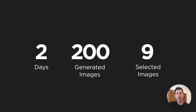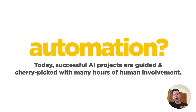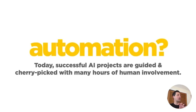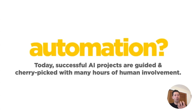What I want to really double down on is that there's so much human intervention to make this. People look at these ideas and say 'AI did all of this,' and I have to stop them. This is not automation entirely. Today, successful AI projects are guided and cherry-picked with many hours of human involvement. Any AI project you see go viral online is the final product after many revisions and edits — AI was assisting, not taking over the project.